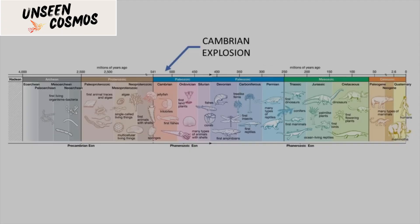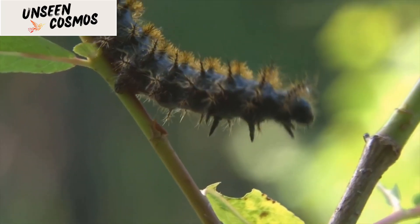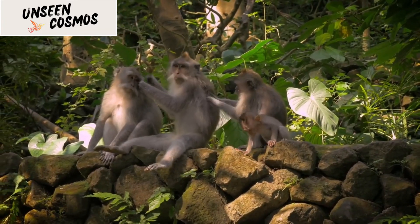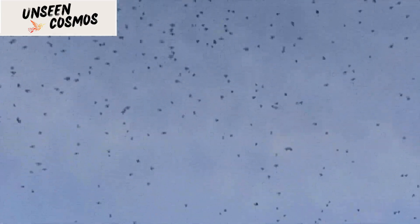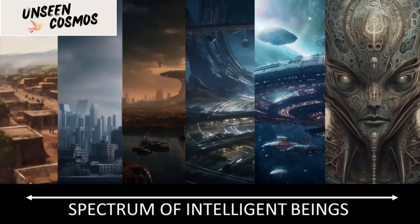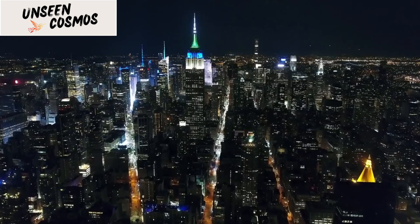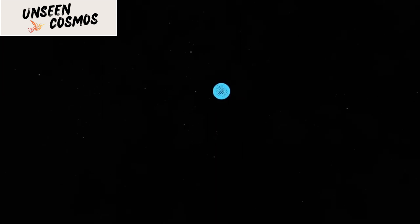Another intriguing possibility is that there might be a great filter that acts as a barrier to the development or longevity of civilizations. The great filter could be a crucial step in the evolution of life or the emergence of intelligent civilizations that is exceptionally difficult to overcome. It could be a hurdle that most civilizations fail to pass, thereby explaining the apparent absence of advanced extraterrestrial life. The great filter could lie behind us, implying that we have successfully navigated through the challenges to reach our current state.